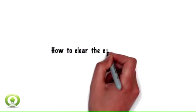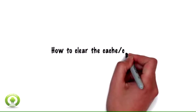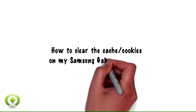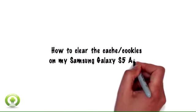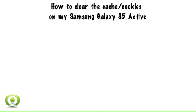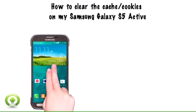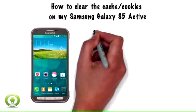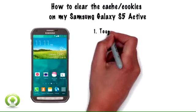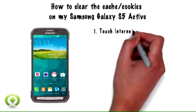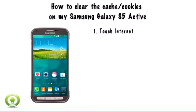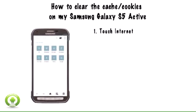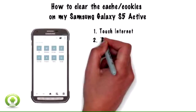How to clear the cache and cookies on my Samsung Galaxy S5 Active. The cache stores files for faster web browsing. Clearing the cache can help resolve some issues and also save space on your Galaxy S5 Active. Cookies are files that store information and allow websites to remember your preferences.